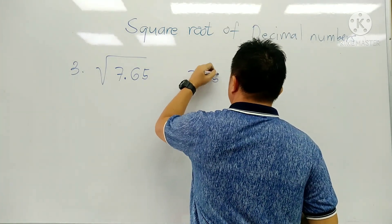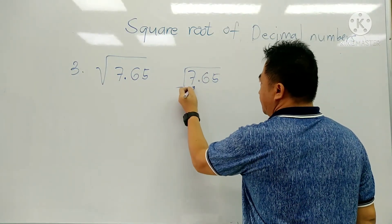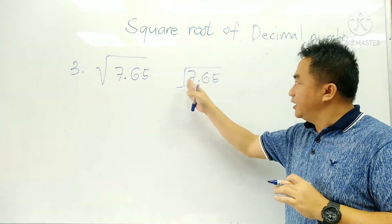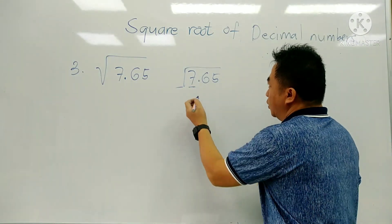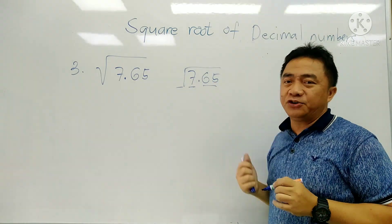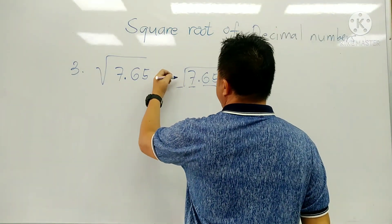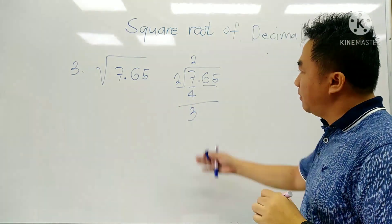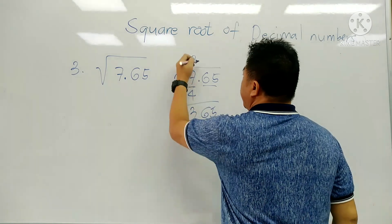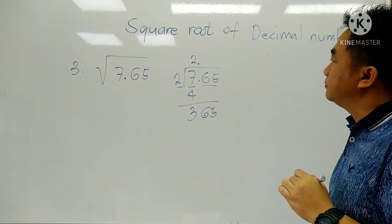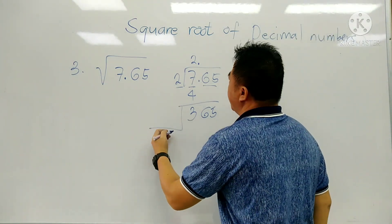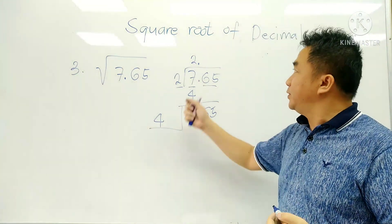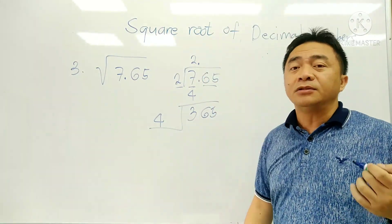We have 7.65. From the left side of the decimal we have only 1 digit — 7 — and you cannot add 0 on the left side, only on the right. So we have 7 alone, and on the right side we have the pair 65. We start with 7: 2 times 2 is 4. We subtract: 7 minus 4 is 3. Then we bring down 65 — we have 365. The decimal point goes here. Our new divisor is 4, and we need a number such that the product is not more than 365.